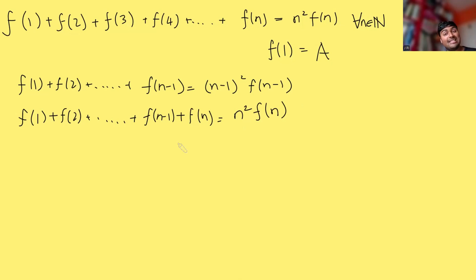Great now these two things here they look awfully similar in fact this guy here is the same as this guy here so we can just substitute that directly in. So (n-1) squared f(n-1) + f(n) equals n squared lots of f(n).